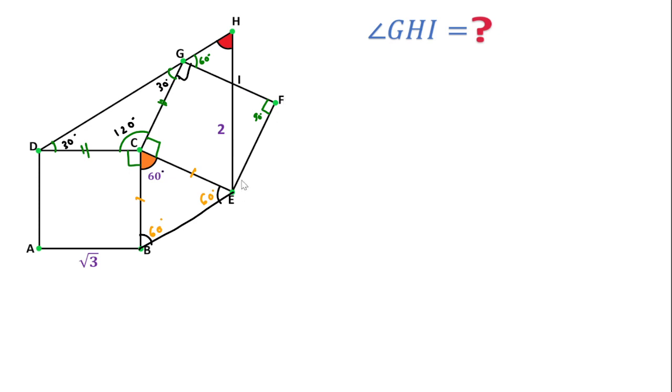We can say that IFE is a right angle triangle. We can write in right angle triangle IFE, the side length of this square is root 3.